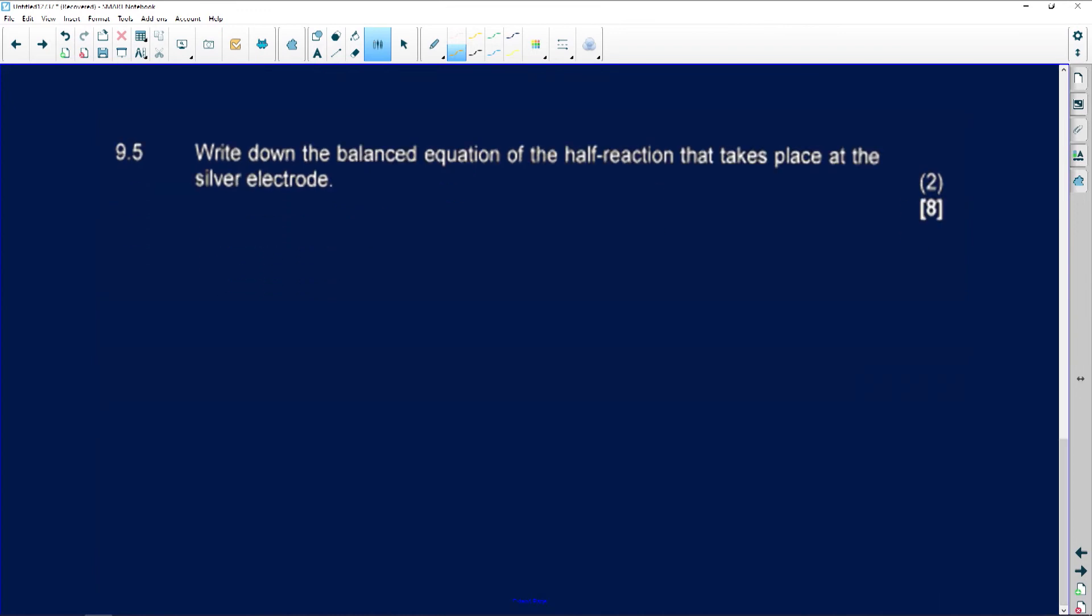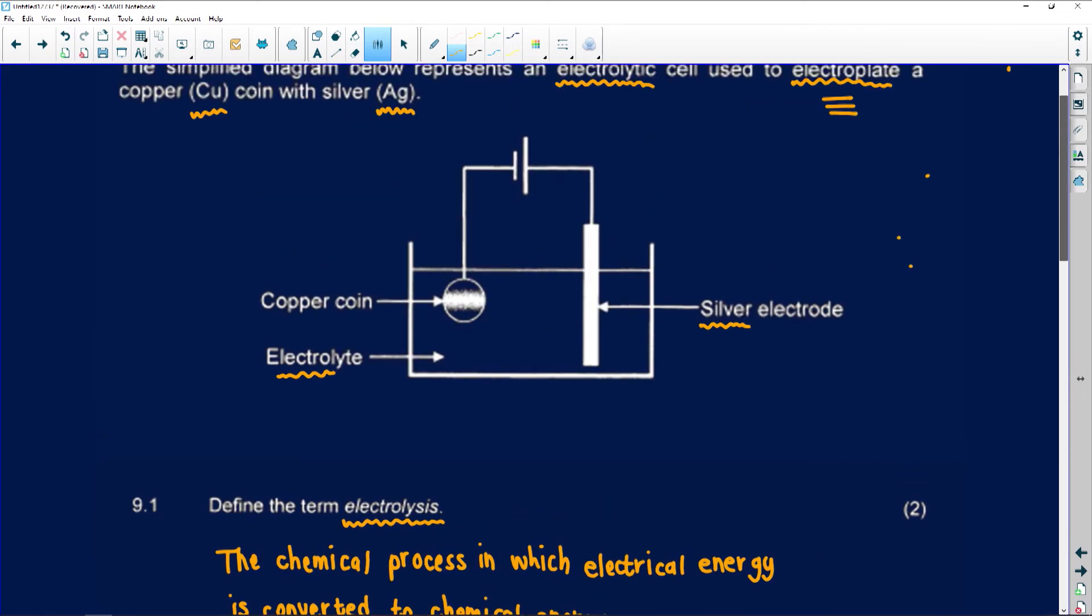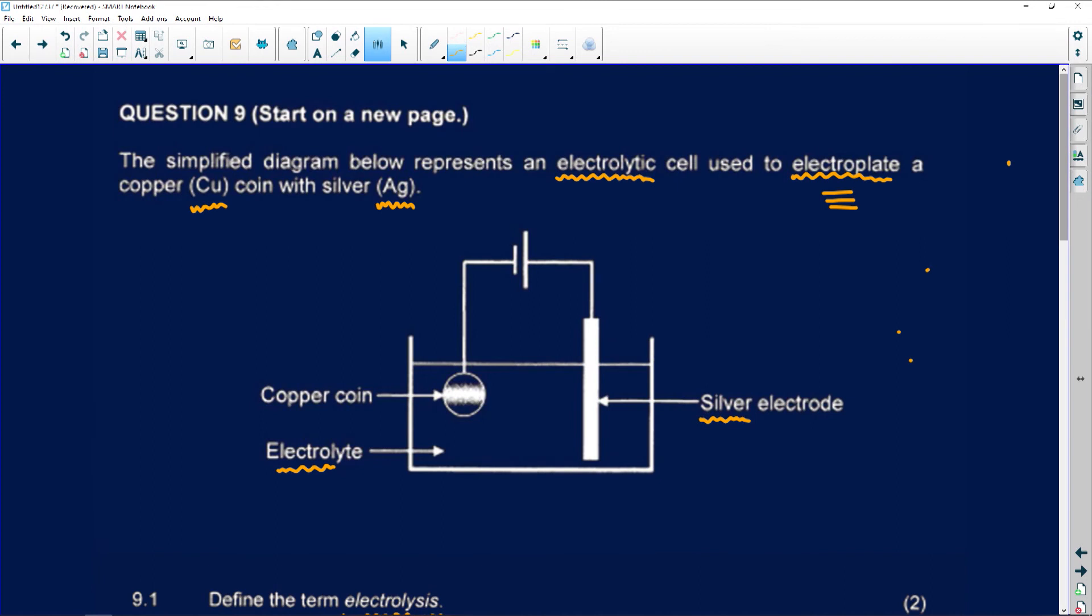Let's look at number 9.5. This question says I must write down the balanced equation. This is very crucial. Balancing we learned in grade 10. We must write down the balanced equation of the half reaction that takes place at the silver electrode. I want to go back to the diagram. Using your 4B or 4A standard table, I know that the silver must coat the copper, so the silver will lose its electrons and fall into solution.